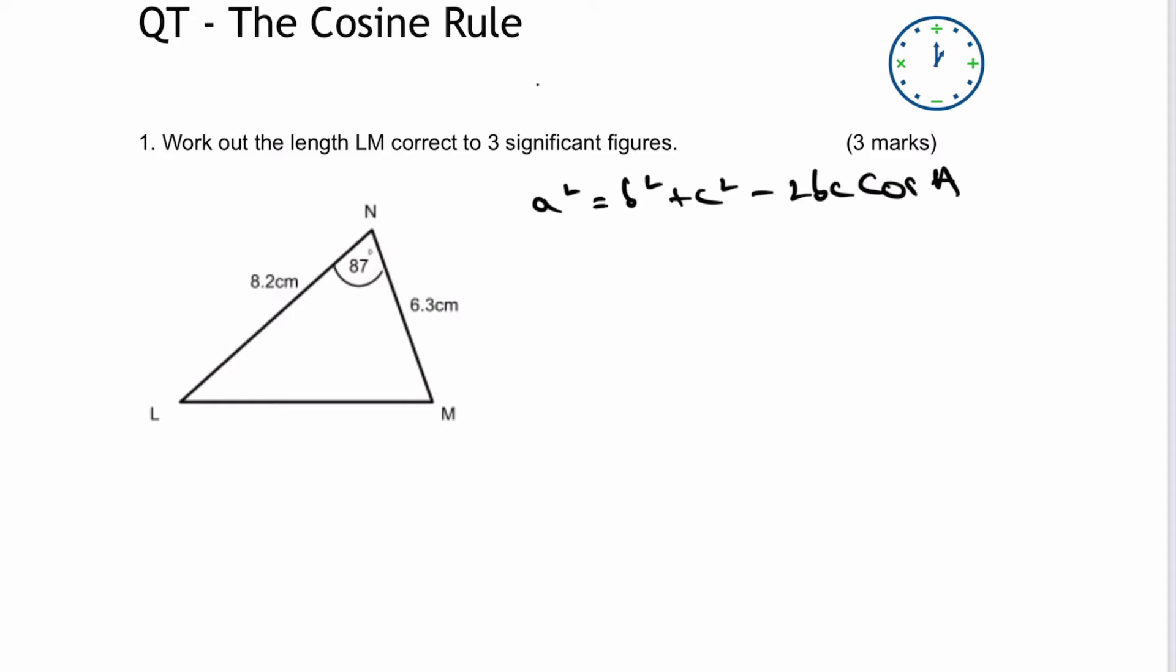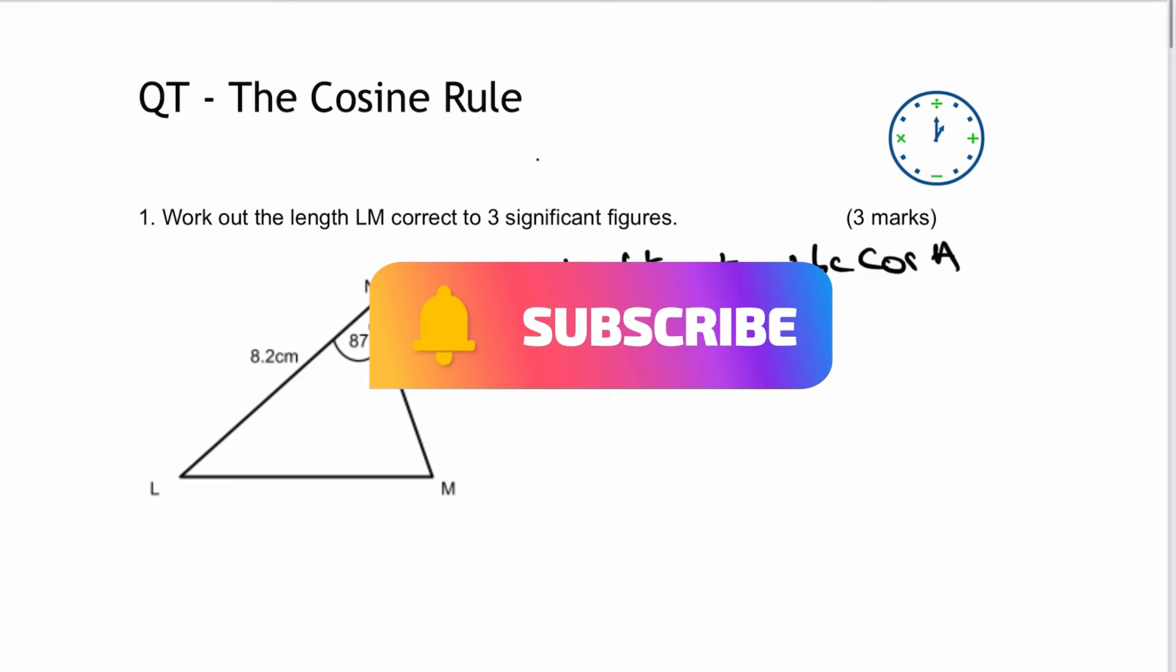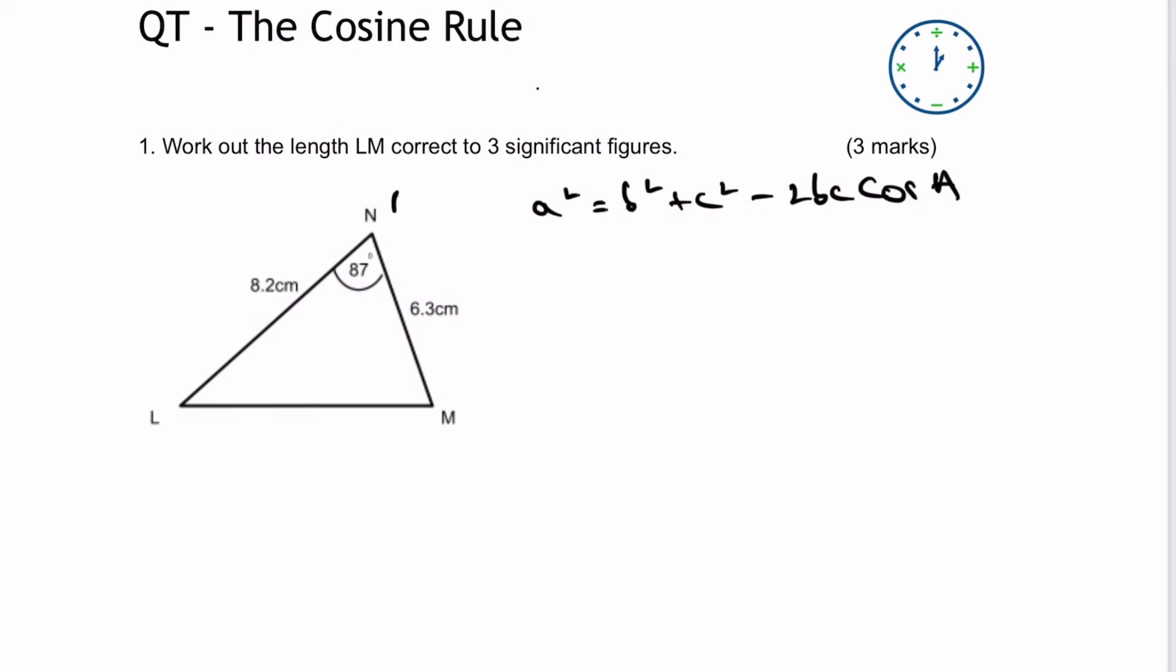It's just a case of assigning those letters to the triangle that you've been given because it's very common for angles to be capitals and sides, which are opposite, to be lowercase. In this particular case, LM is actually going to be a, and then I've got b and c which are adjacent to it.